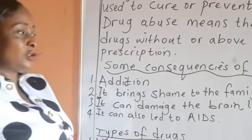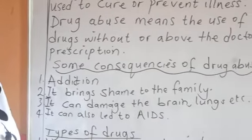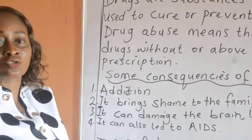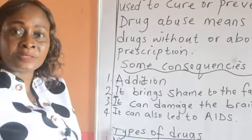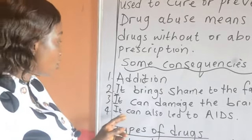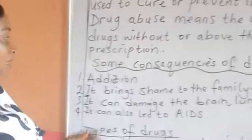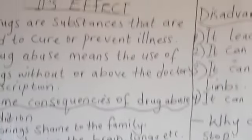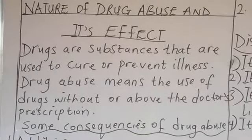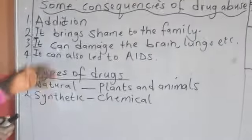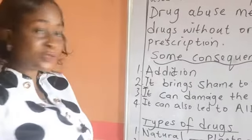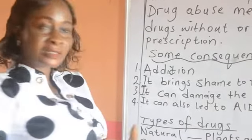It can damage the brain, the lungs, and some other organs of the body. When somebody takes too much of a particular drug, the person's organs may be damaged. So it isn't good to take drugs above or without a doctor's prescription. It can also lead to AIDS — acquired immune deficiency syndrome. So you see, there are so many consequences of drug abuse.